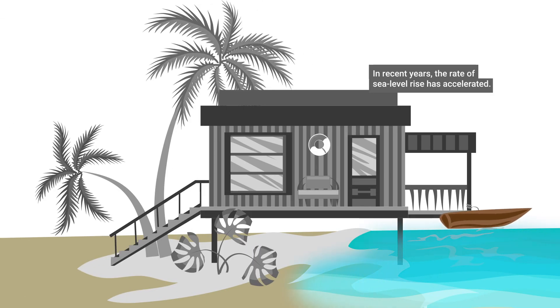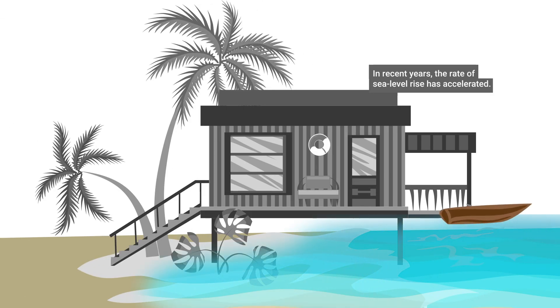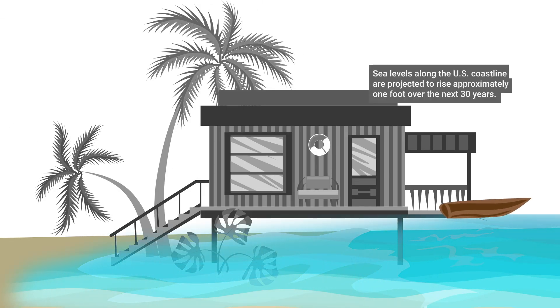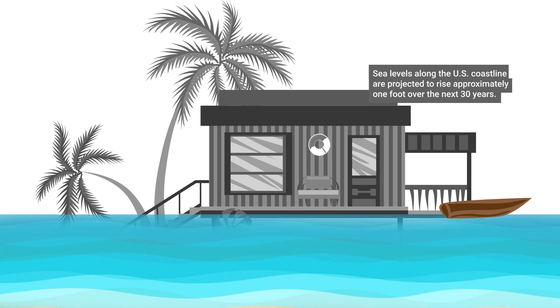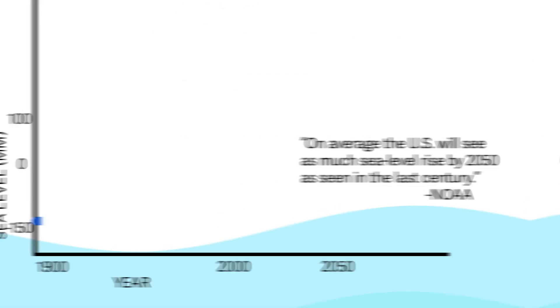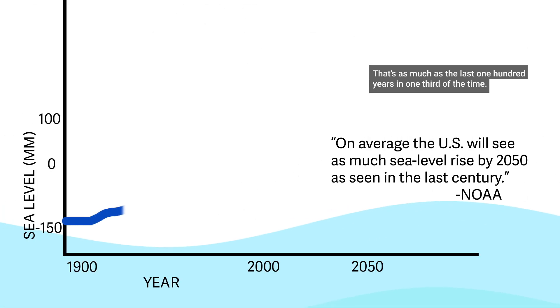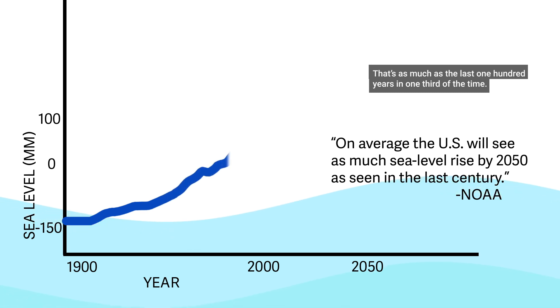In recent years, the rate of sea level rise has accelerated. Sea levels along the U.S. coastline are projected to rise approximately one foot over the next 30 years — that's as much as the last 100 years in one-third of the time.